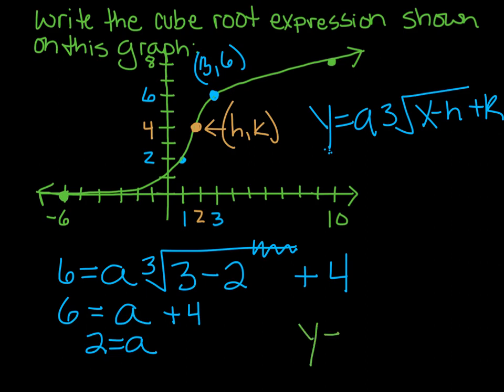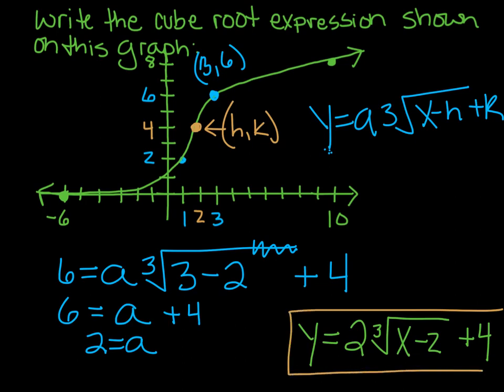And then we're going to rewrite the equation. y or f of x equals a is 2 cube root x minus h and k, so x minus 2 and then plus 4. Just like we've done with all the other types of functions so far this year. So that's all I have for you. I will see you in class tomorrow. Bye.